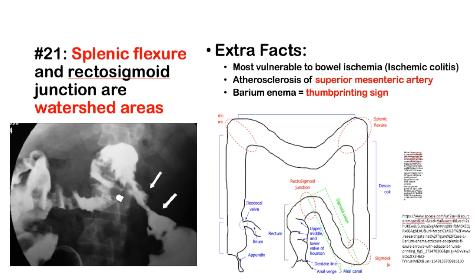Number 21: The splenic flexure and rectosigmoid junction are watershed areas — where two arteries meet. In this case, the superior mesenteric and inferior mesenteric arteries meet at the splenic flexure, and there's a zone in between that gets less perfusion because neither artery covers enough ground to reach that distal area. With atherosclerosis of the superior mesenteric artery, ischemia to the watershed areas is more common, and a thumbprinting sign on barium enema imaging can indicate ischemic colitis at the splenic flexure.